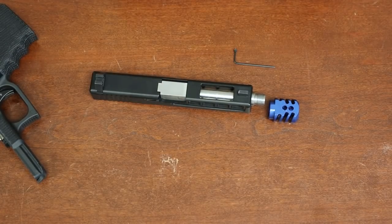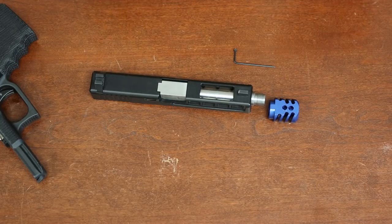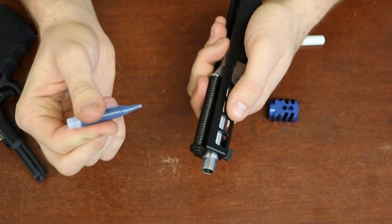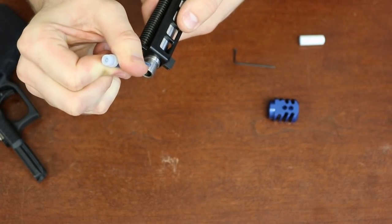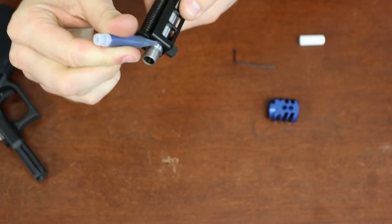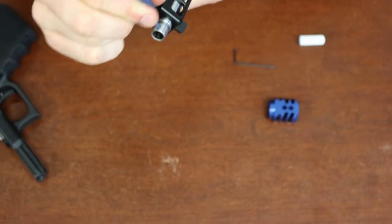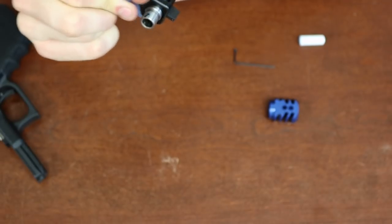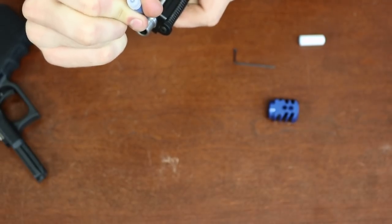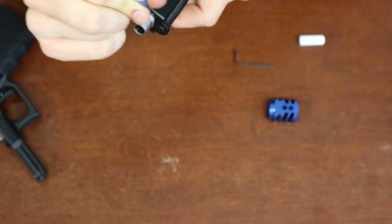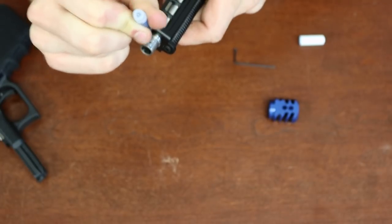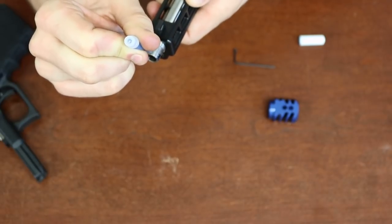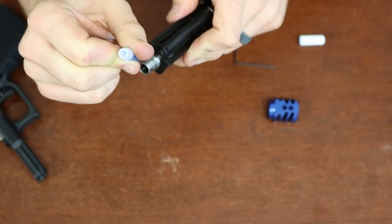I suggest using blue Loctite for this because if you use red or Rock Tite or whatever the more aggressive ones are, you're going to have a really hard time getting this off if you ever decide that you don't want to use it. A little bit of Loctite. A little bit goes a long way.